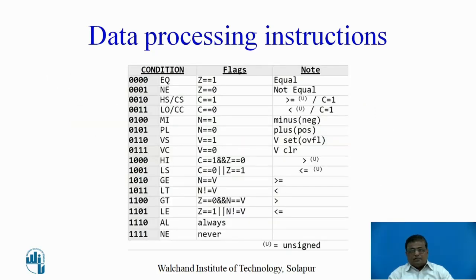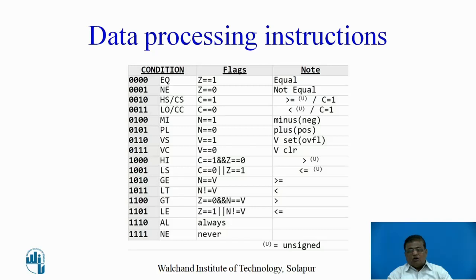In data processing instructions, different conditions can be written within the instruction. For example, if you write the instruction with the prefix EQ, that instruction will execute only when the zero flag is set. If we use the condition NE, that is not equal, then the instruction will execute when the zero flag is reset. Other conditions are also available, meaning these data processing instructions can be executed conditionally.